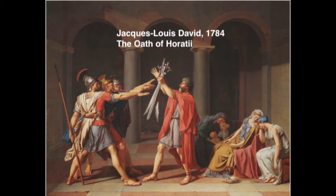The first step is to set the scene: what do you see, who or what is in the scene, and what might be happening? Looking at this piece, you see a group of figures. Three men on the left are each wearing a helmet and raise their arms toward the central figure, who faces them holding three swords. On the right, three women and two children lean on one another and look sad. That's the first step — just describe what you see.